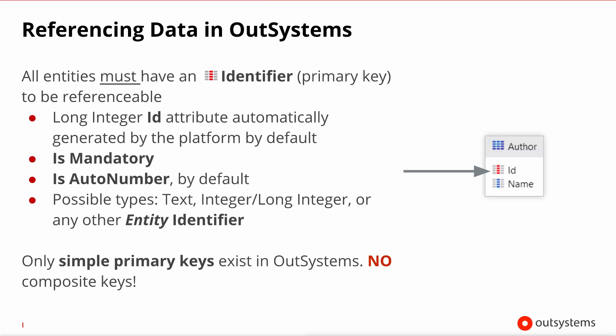In OutSystems, to implement a primary key, you need to have an identifier attribute. This is created automatically by the platform, but you can adjust its type to be either an integer, long integer, or text. These attributes are always mandatory, and for an integer-based identifier, it will be auto-numbered — every time you insert a new row, it will auto-generate the new ID. It's important to note that only simple primary keys exist in OutSystems, so you cannot implement composite keys.